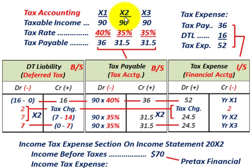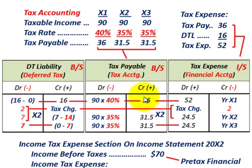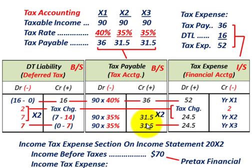For tax payable: our taxable income is $90,000 for each year. For year X1, $90,000 times 40% gives a current tax expense or tax payable of $36,000 — we credit tax payable by $36,000. For years X2 and X3, the rate drops to 35%, so $90,000 times 35% gives a tax payable of $31,500 for each of those years — we credit or increase tax payable by $31,500.